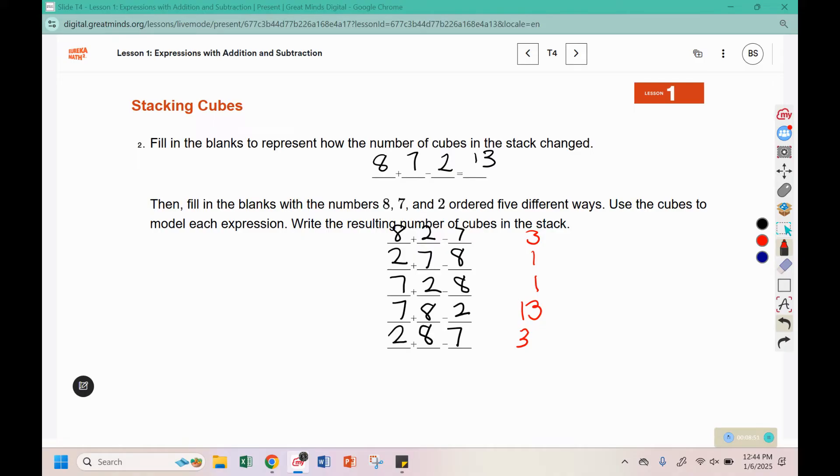So there's several different outcomes depending on the order in which you add and in which you subtract. When we had just addition, we could change the order and we always got the same number. But with subtraction, here you can see that that's not always the case. Sometimes we get the same number. I see there's two ones, two thirteens, and two threes. But subtraction is not commutative. The order in subtraction does matter.